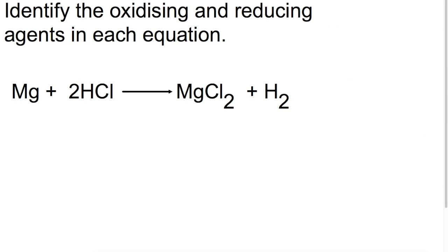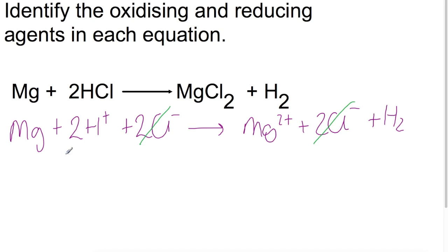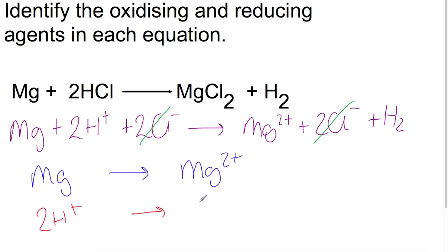For the second example we need to go through all the steps. The ionic equation is: magnesium plus 2H⁺ plus 2Cl⁻ gives Mg²⁺ plus 2Cl⁻ plus hydrogen gas. The spectator ions are the chloride ions. Splitting the equation: Mg becomes Mg²⁺, and 2H⁺ becomes H₂. Adding electrons: magnesium loses two electrons to become a 2+ ion, and these are transferred to the two protons to form hydrogen.